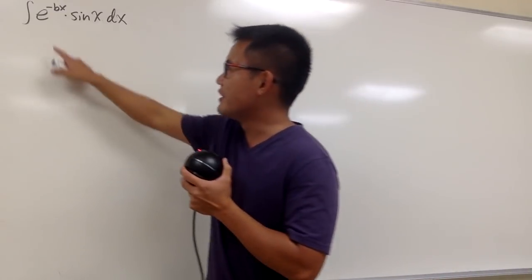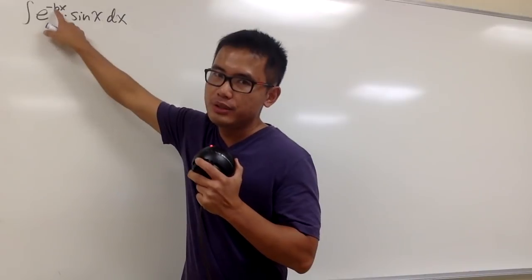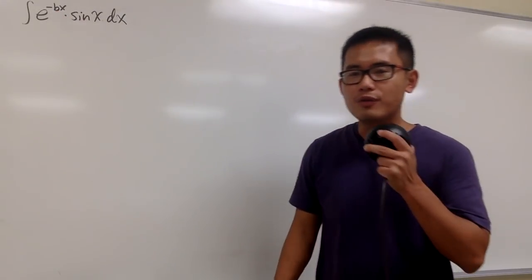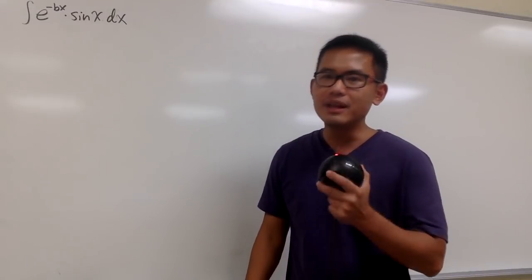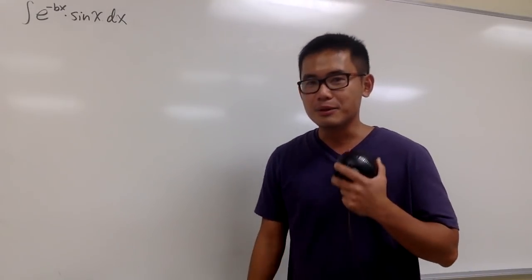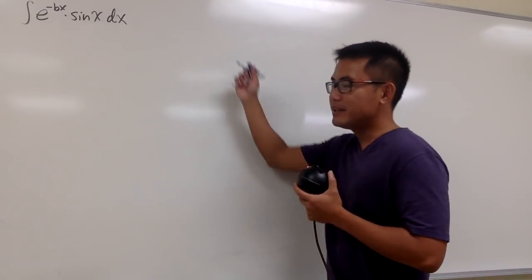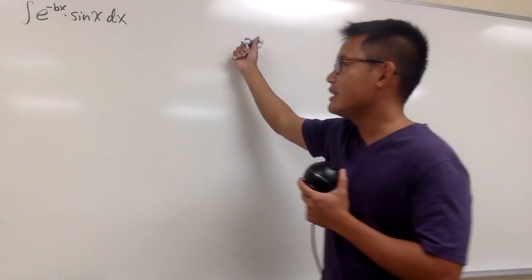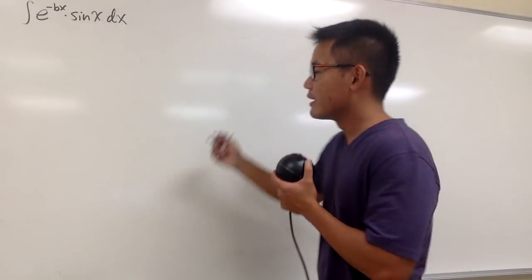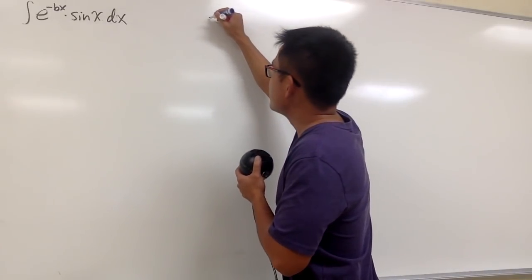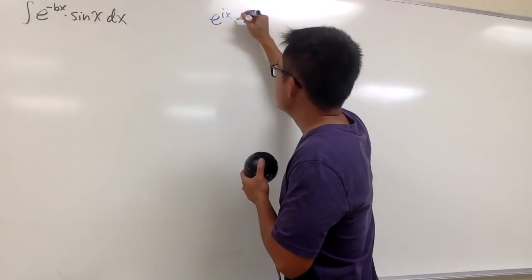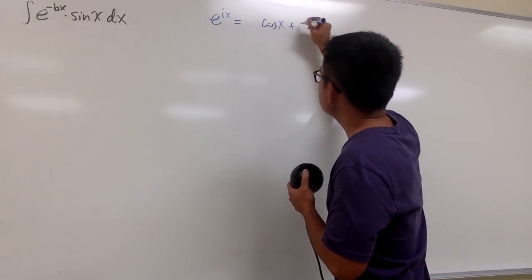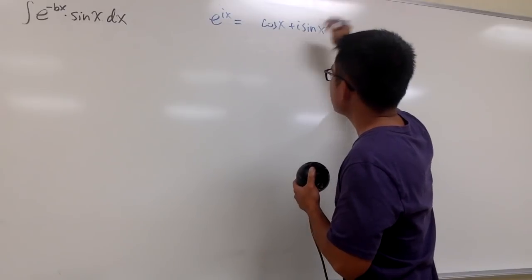First of all, we notice that we have an exponential part, namely e to the negative bx, and we also have the sin x right here. Recall from Euler's formula, it does involve e to the something and also sin. Euler's formula says we know that e to the ix is equal to cos x plus i sin x.